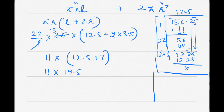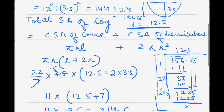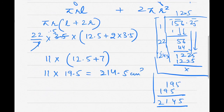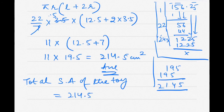Now multiplying: 11 × 19.5. Working it out: 11 × 195 equals 2145, giving 214.5 with one decimal place. So the total surface area of the toy is 214.5 centimeter square.